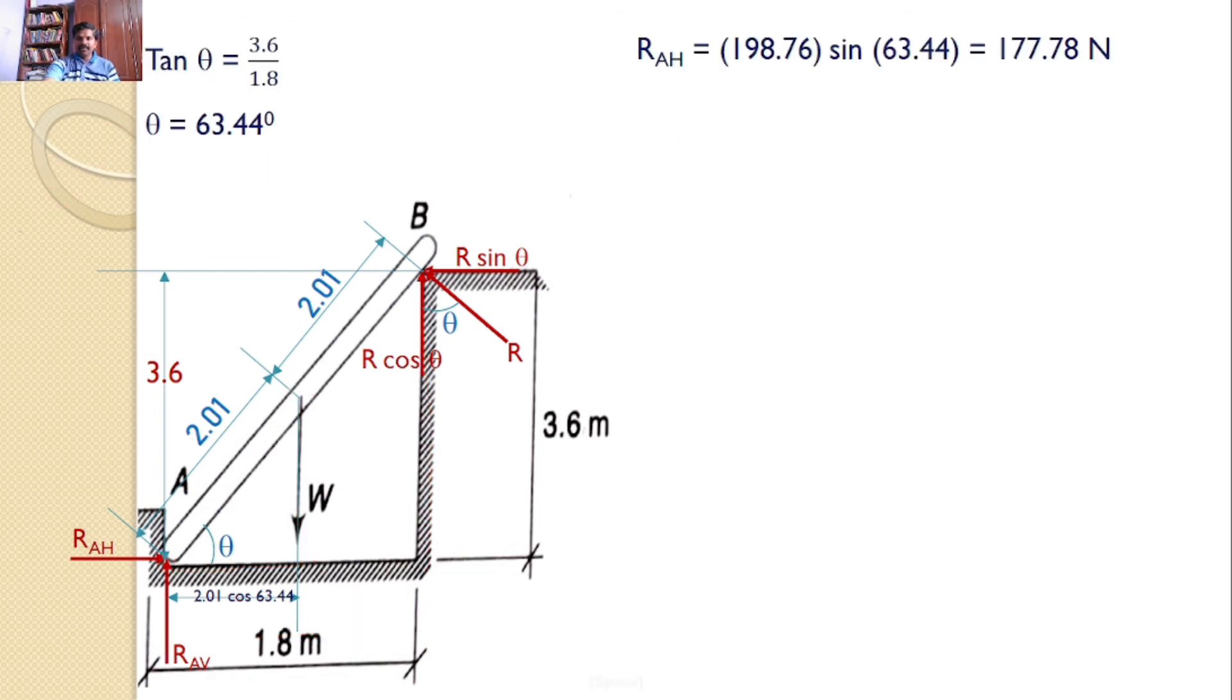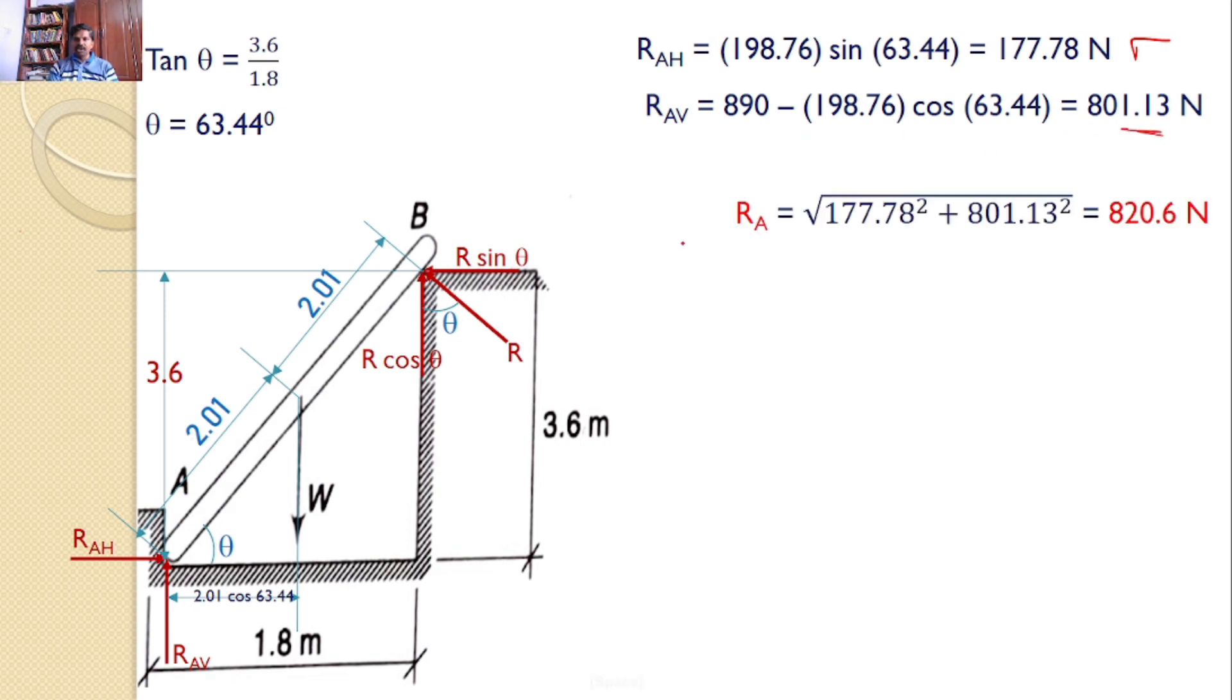From equation 1, RAH equals 198.76 times sin 63.44, which is 177.78 Newtons. From equation 2, I can find RAV, which is 801.13 Newtons.